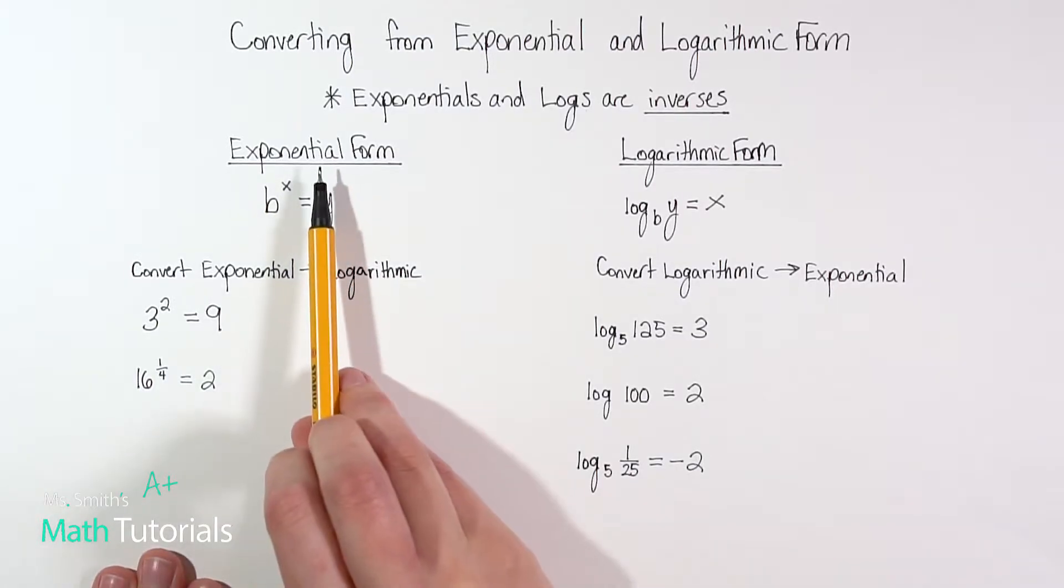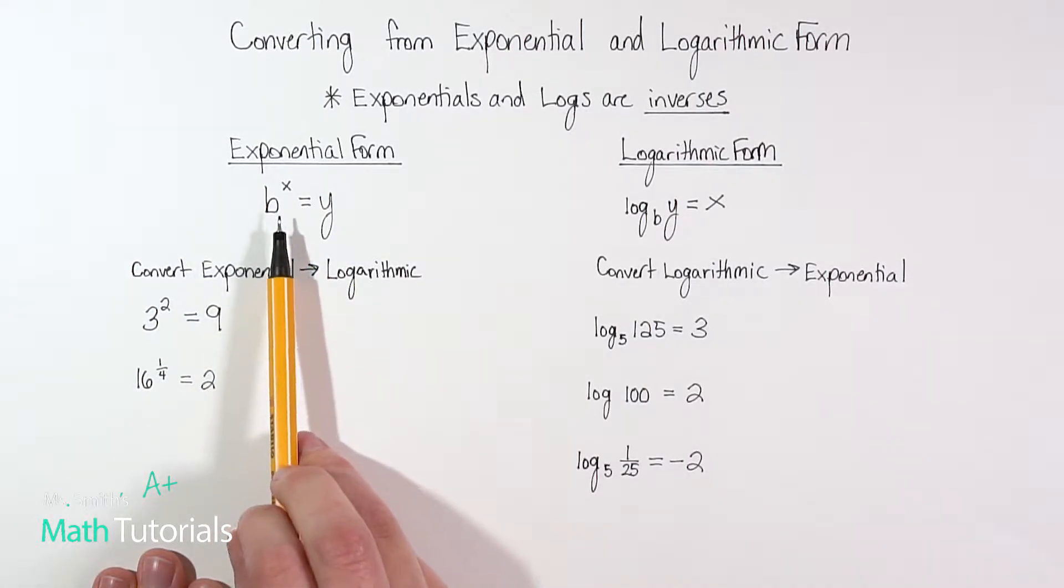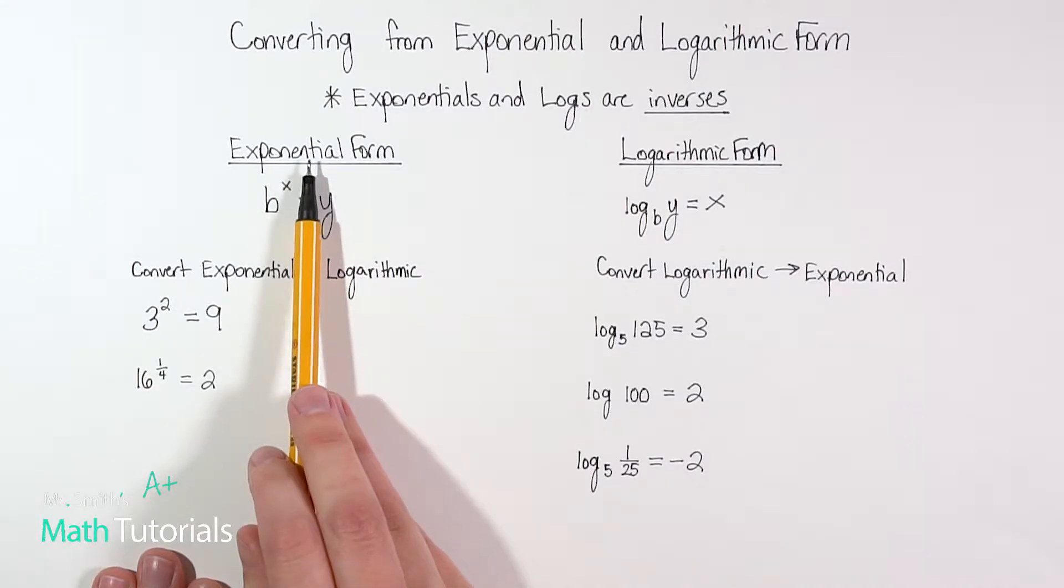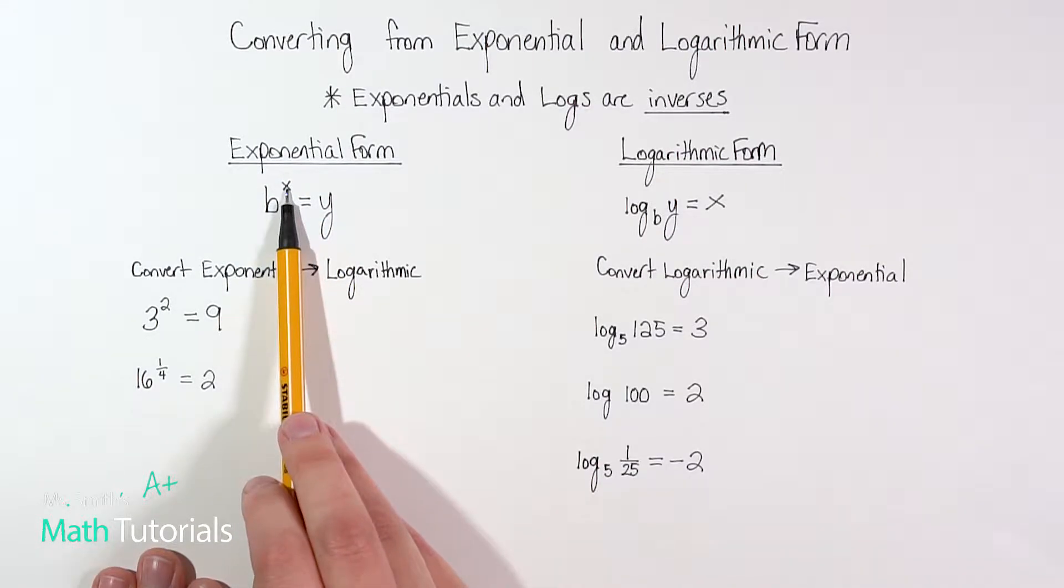So first we'll talk about exponential form. Exponential form is, and in this case I've just used b, x, and y - we can change out variables for these - but we would say b to the x power equals y. What makes it an exponential form is that we've got a base and we've got an exponent, b to the x power.